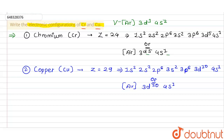Vanadium has atomic number 23 and chromium has atomic number 24. So one more electron needs to be filled. It should go into the d orbital, giving 3d⁴ 4s², but the 3d⁴ configuration is not stable. So we move one electron from the 4s to the 3d, resulting in 3d⁵ 4s¹.